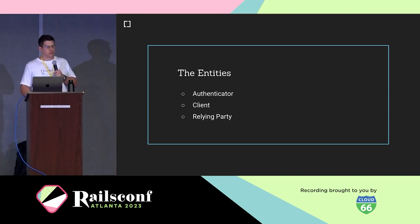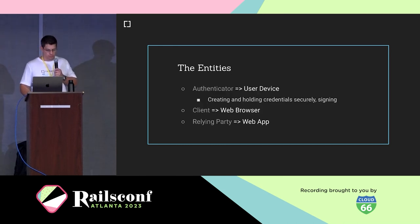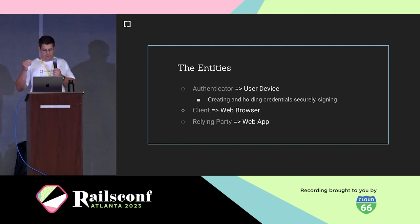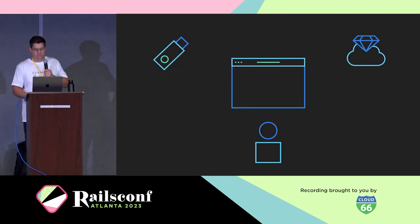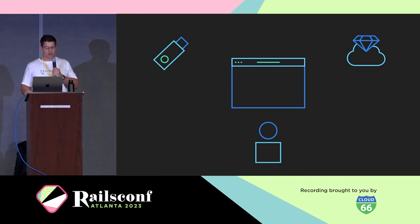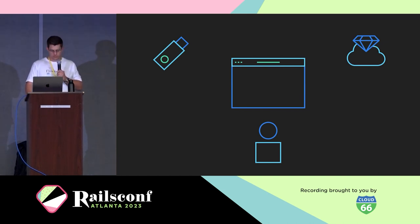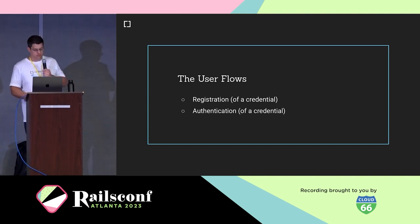The three entities are: the authenticator — the hardware device, security key, phone, or laptop that stores the credentials and does the signing; the client — the web browser; and the relying party — our Ruby web server. In a small diagram, on the left you have the authenticator, in the middle the browser, on the right the server, and a user below that interacts with these components. The two user flows are naturally registration of a credential and authentication of a credential.